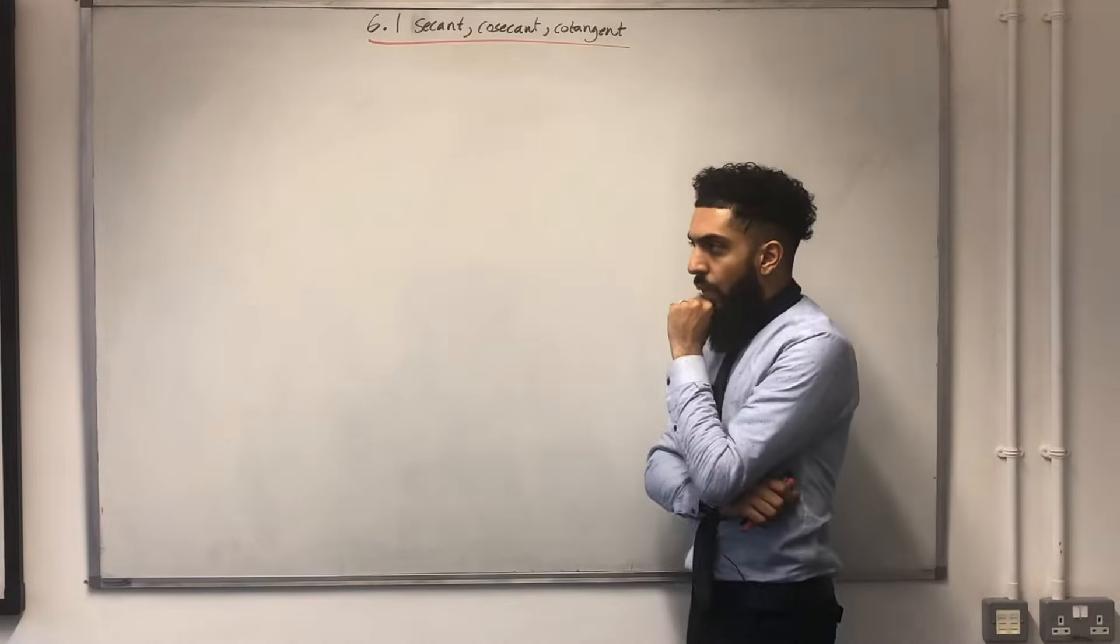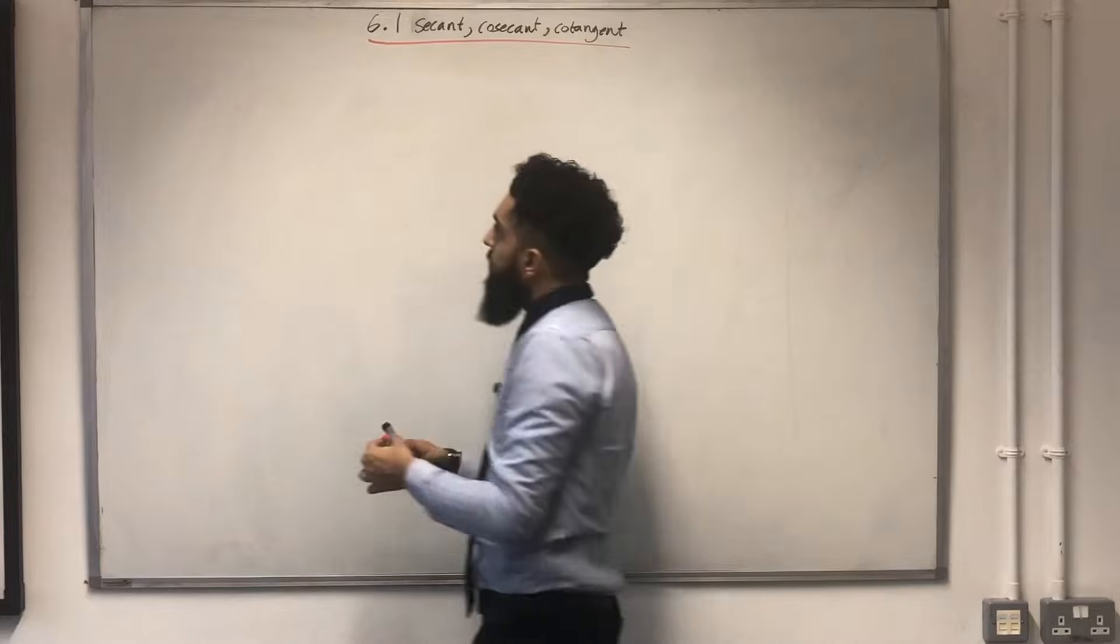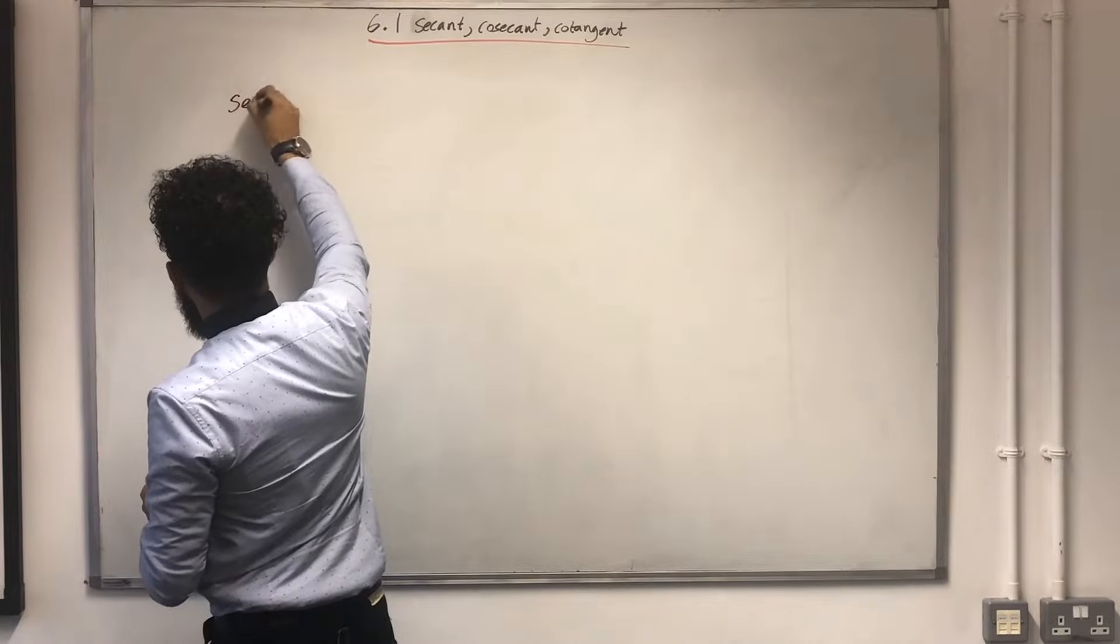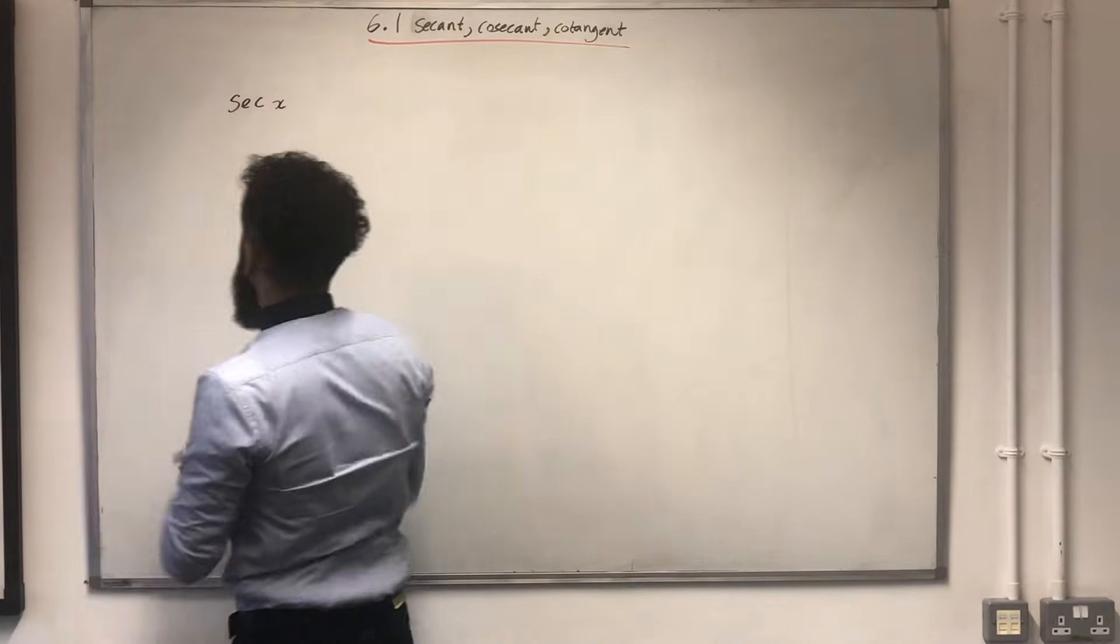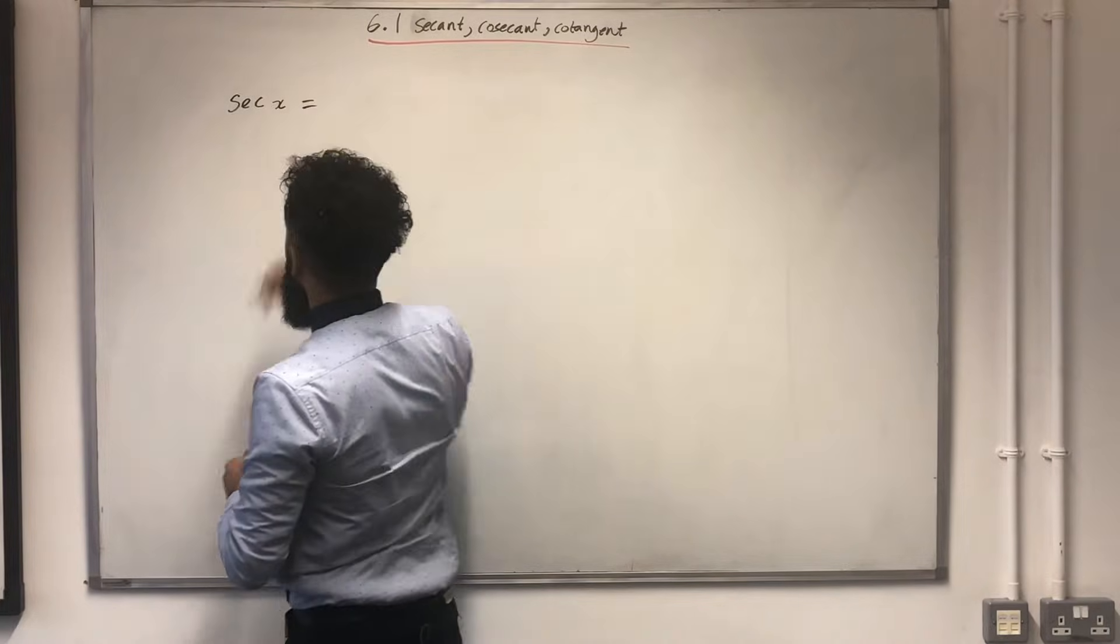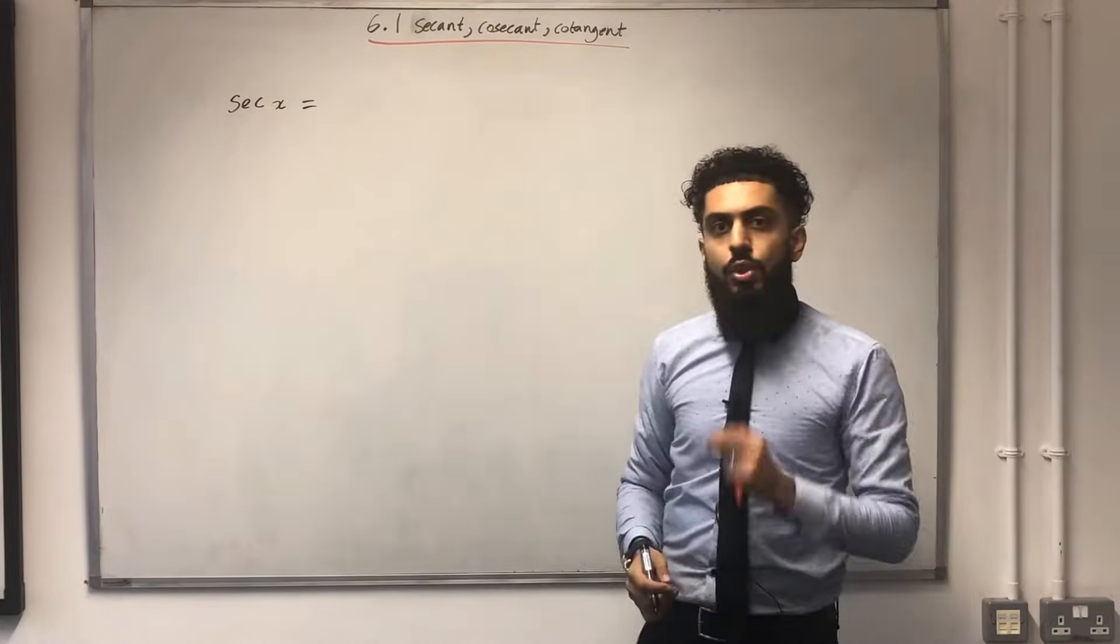Right, first of all, I'm going to start off with secant x, which is called sec x in short. Sec x is equal to 1 over cos x.